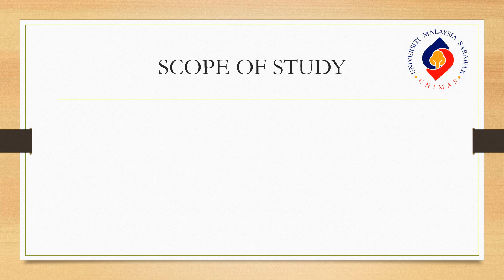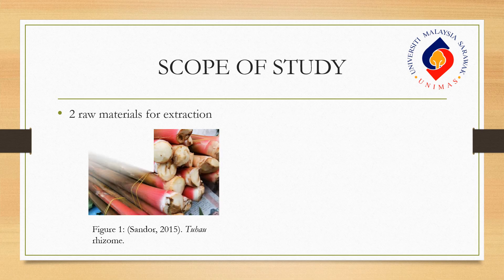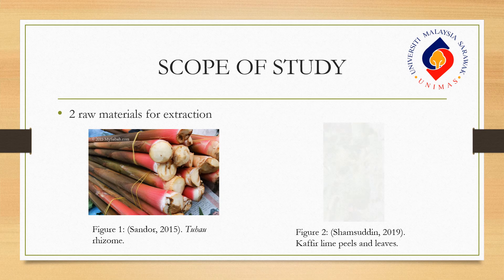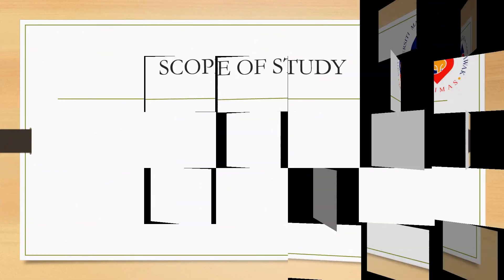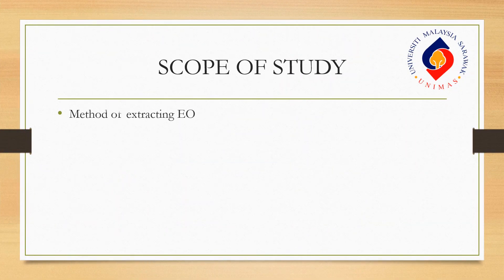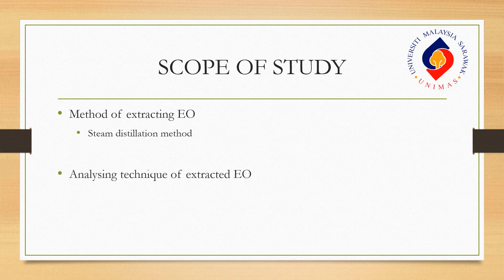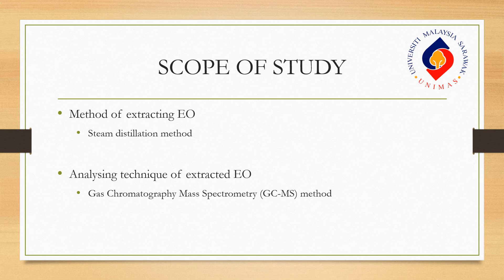For the scope of study, I use two different raw materials for extraction. The first one is Etlingera coquinea, more commonly known as Tuhau, using the rhizome part. Next, I use Kaffir lime, or Citrus hystrix, from the fruit peels and also the leaves. The extraction method used is steam distillation, while the analysis technique for the extracted essential oil is gas chromatography-mass spectrometry, or GCMS.